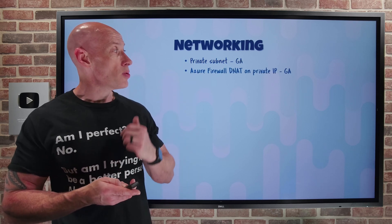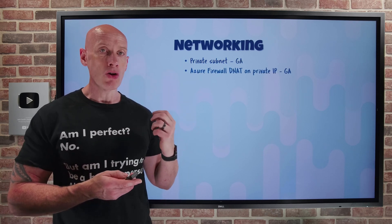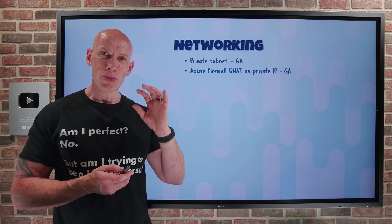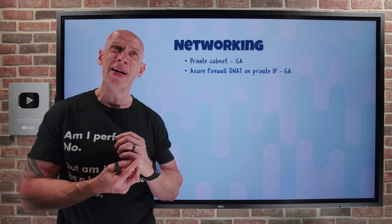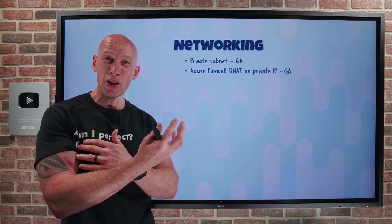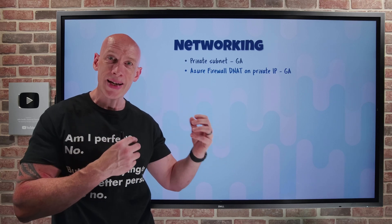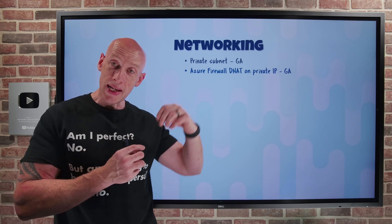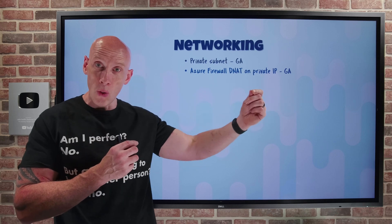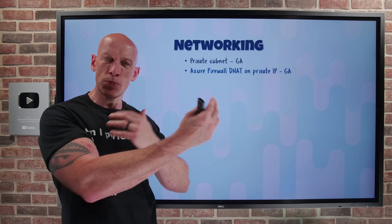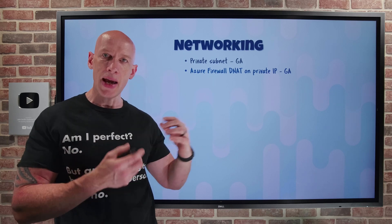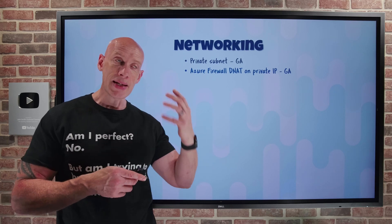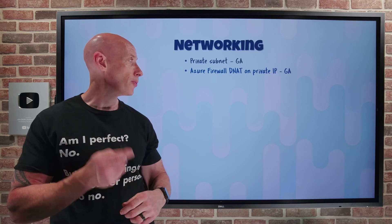Azure Firewall DNAT on private IPs has gone GA. DNAT is destination network address translation — so if I have an overlapping IP address range situation on my internal network, DNAT transforms the destination IP and/or port and reverses any responses, solving IP challenges. Now even on the private IP addresses of Azure Firewall, it will do that DNAT configuration for you.